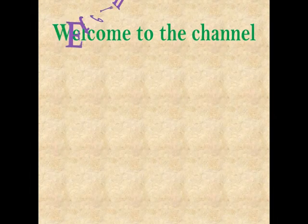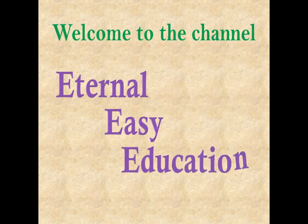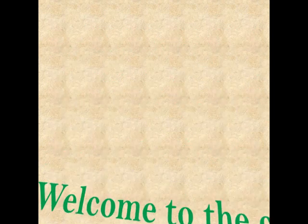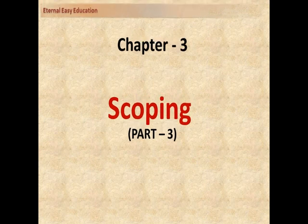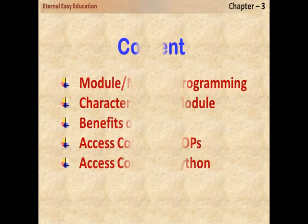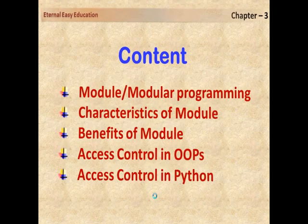Hello students, welcome to the YouTube channel Eternal EC Education. In this session, you are going to learn Chapter 3, Scoping, Part 3. The content of the session includes: what is a module or modular programming, what are the characteristics of a module, benefits of a module, access control in object-oriented programs, and access control in Python. Let's start the session.